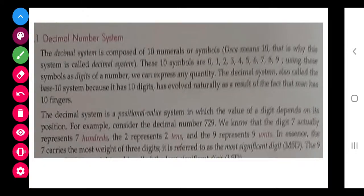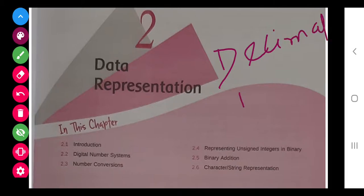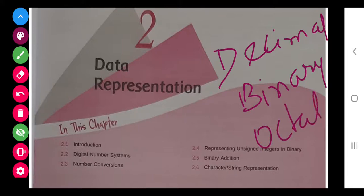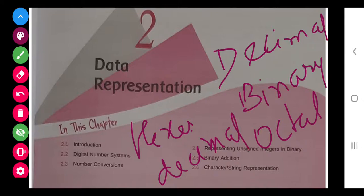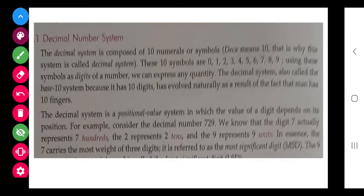Under the digital number system there are four types: the first is decimal, the second is binary, the third is octal, and the fourth is hexadecimal.